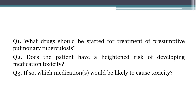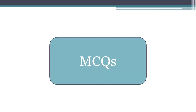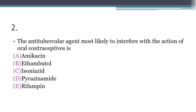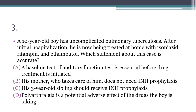Questions: What drugs should be started for treatment of presumptive pulmonary tuberculosis before getting culture and sensitivity results? Does the patient have a heightened risk of developing medication toxicity, and if so which medications are likely to cause toxicity? If this patient were also HIV-positive, which drug would you replace out of the four first-line drugs? MCQ 1: The primary reason for drug combinations in tuberculosis treatment is? MCQ 2: The anti-tubercular agent most likely to interfere with oral contraceptives is? MCQ 3: Regarding a 10-year-old boy on isoniazid, rifampin, and ethambutol, which statement about this case is accurate?